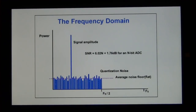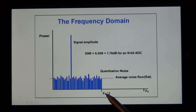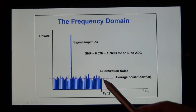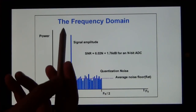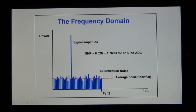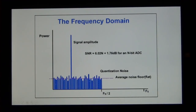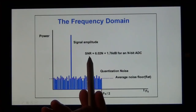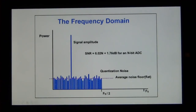We can think about what the spectral content of a signal coming out of an ADC looks like. Here's the sampling frequency — we only care about the signal below half the sampling frequency. The quantization noise is assumed to be white for a sinusoid input. Having a flat quantization noise floor, we get SNR = 6.02N + 1.76 dB for an N-bit ADC.